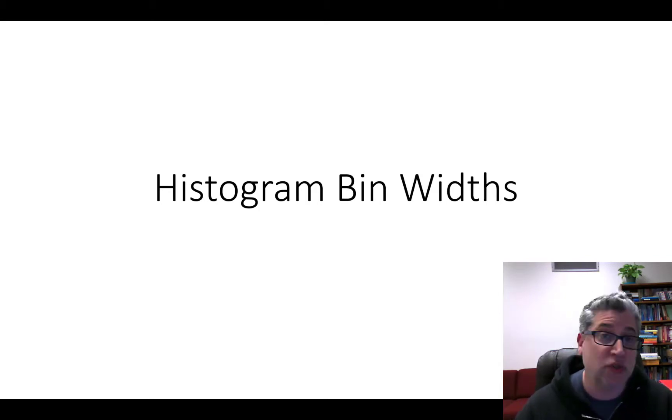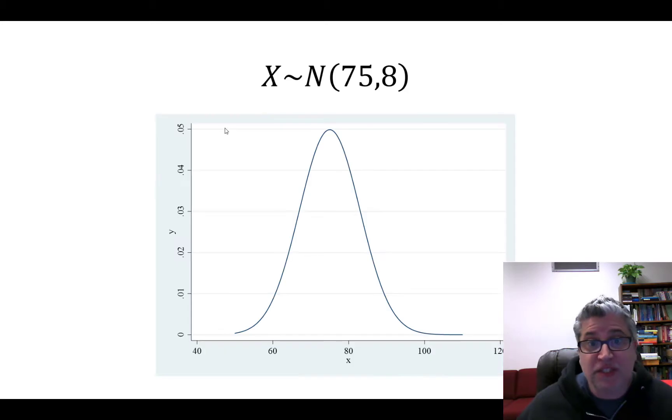That might show you whether your bin widths are too wide or too small. So what I did was I generated 200 observations from this distribution right here. So this is a normal distribution, it has a mean of 75 and a standard deviation of 8, so it's got that nice bell-shaped curve. I just drew 200 observations from this distribution. Of course, in real life you would never know the parent distribution and you'd like to kind of get a handle on what it might be, and that's why you draw the histograms.